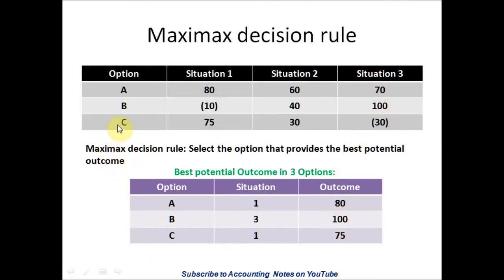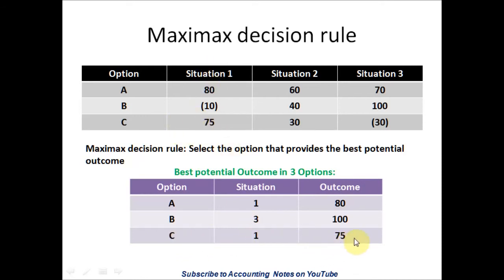Let's look at Option C. Situation 1 is a profit of $75, Situation 2 is a profit of $30, and Situation 3 is a loss of $30. So the best potential outcome for Option C across the three situations is a profit of $75 — that's Option C, Situation 1 at $75.